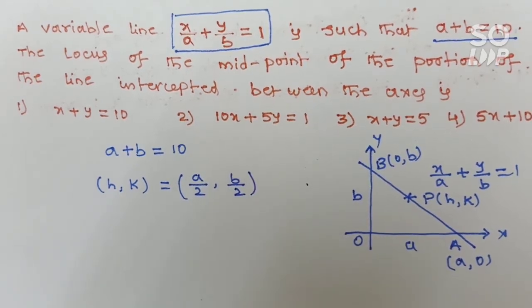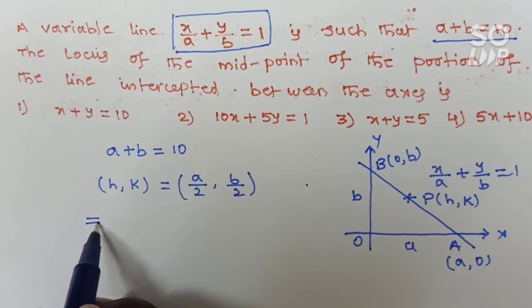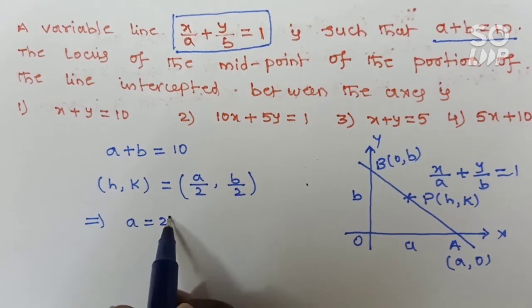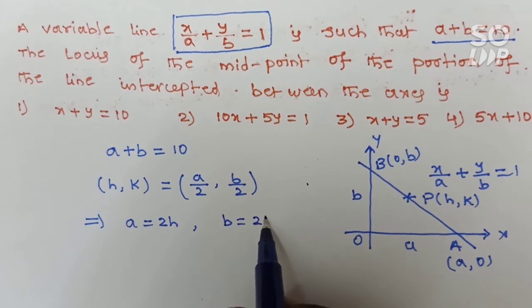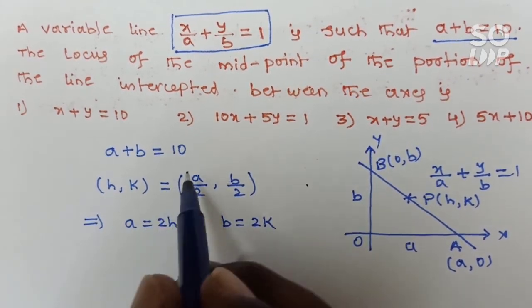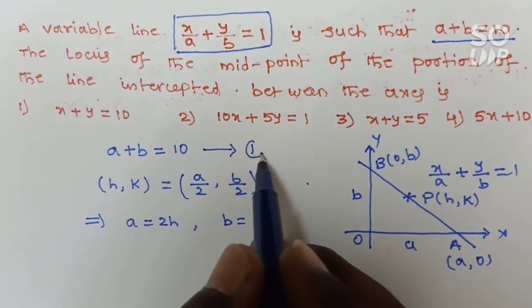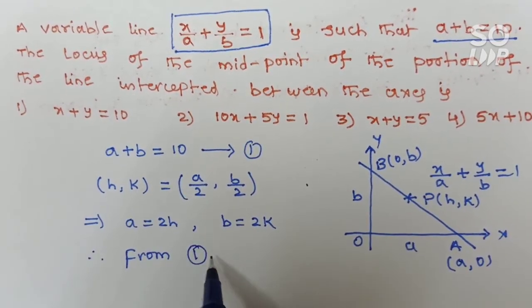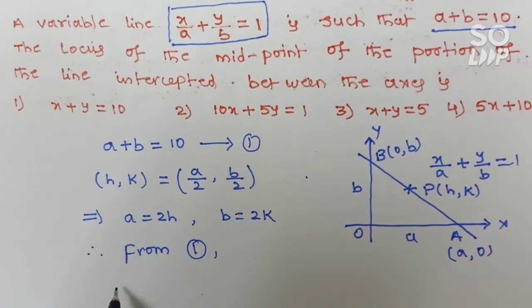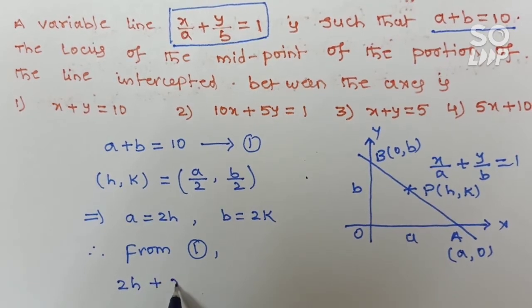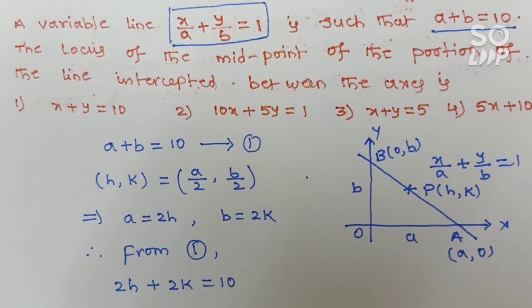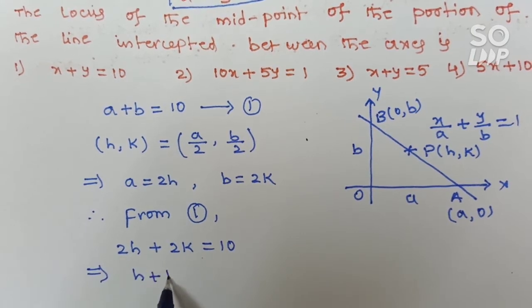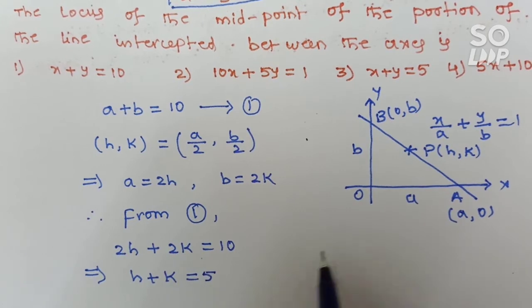From this, A equals 2H and B equals 2K. Substitute both values into the condition a plus b equals 10. That gives 2H plus 2K equals 10. Factor out 2: H plus K equals 5. This is the simplified relation according to the given condition.